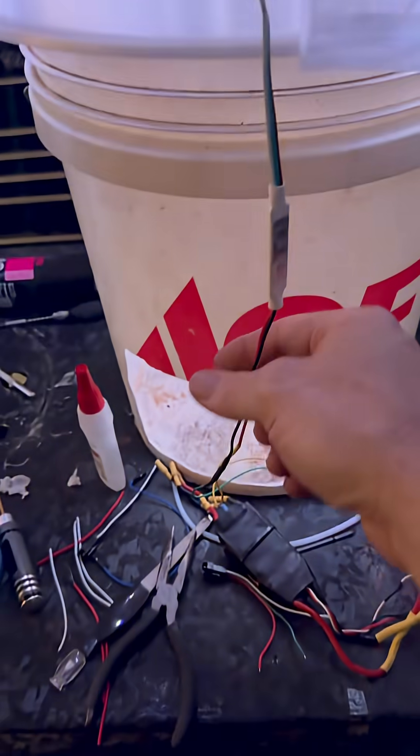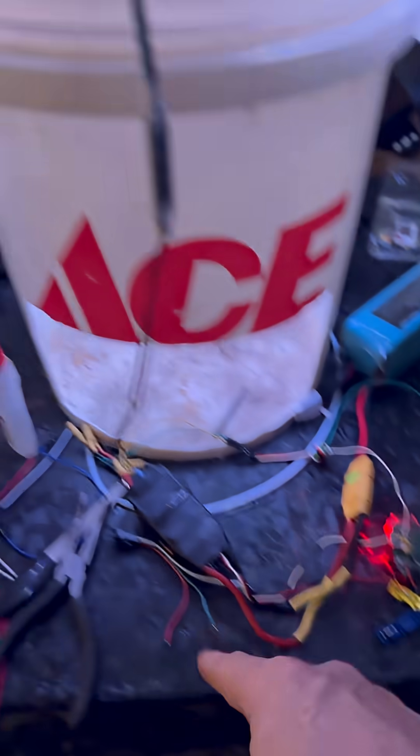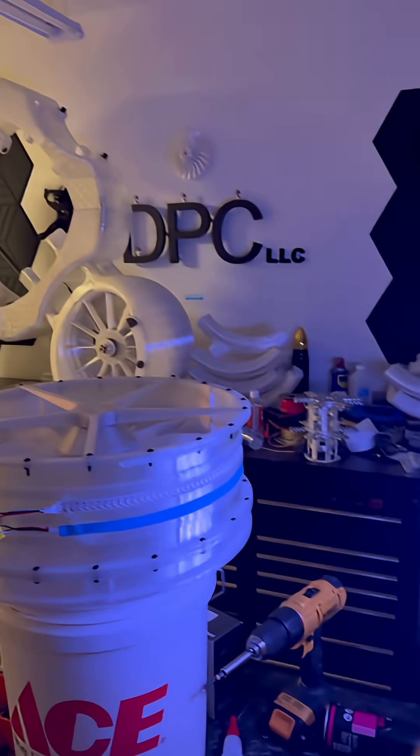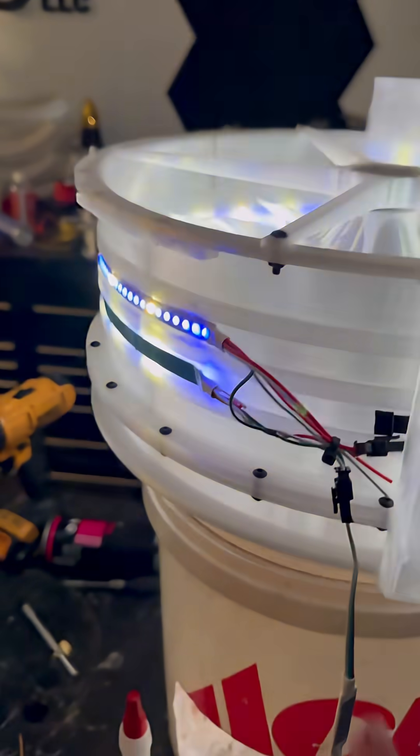These are all wired up. They're on a test rig that I used an old BEC from an ESC for power, just to test them so I don't have to pull the Arduino out of the drone every single time I test this stuff. As you can see, all the lights are running in sequence.